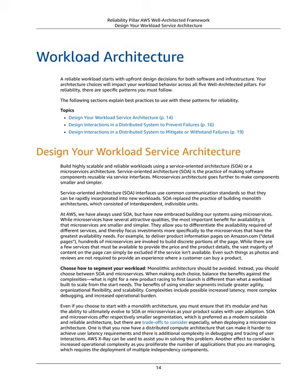At AWS, we have always used SOA but have now embraced building our systems using microservices. While microservices have several attractive qualities, the most important benefit for availability is that microservices are smaller and simpler. They allow you to differentiate the availability required of different services, and thereby focus investments more specifically to the microservices that have the greatest availability needs. For example, to deliver product information pages on Amazon.com, hundreds of microservices are invoked to build discrete portions of the page. While there are a few services that must be available to provide the price and product details, the vast majority of content on the page can simply be excluded if a service isn't available.